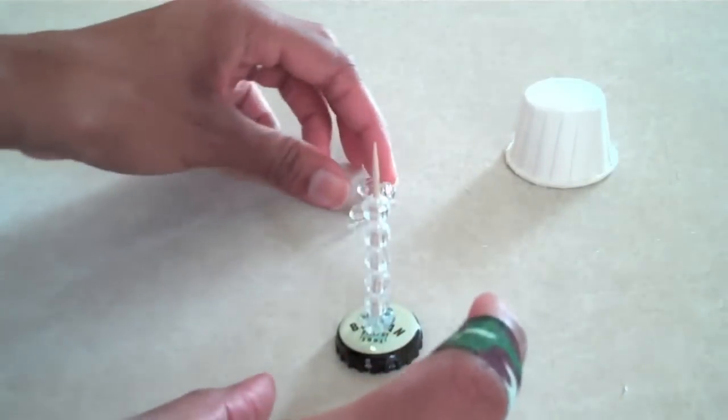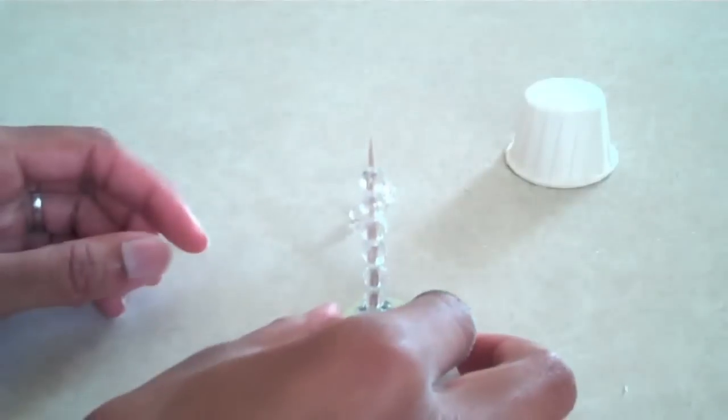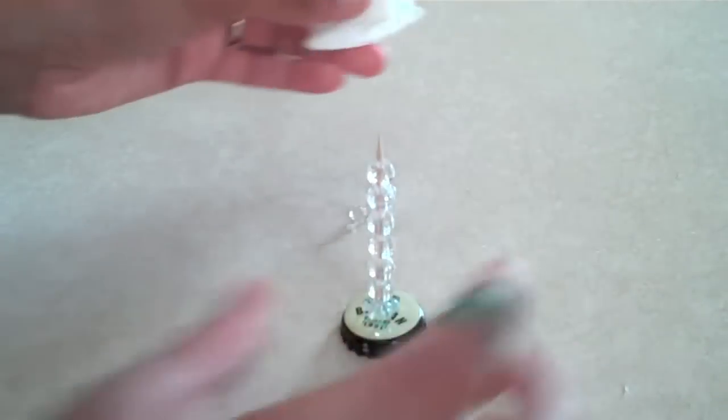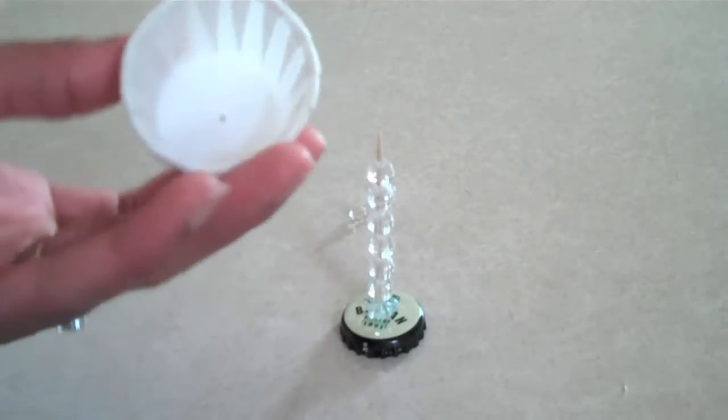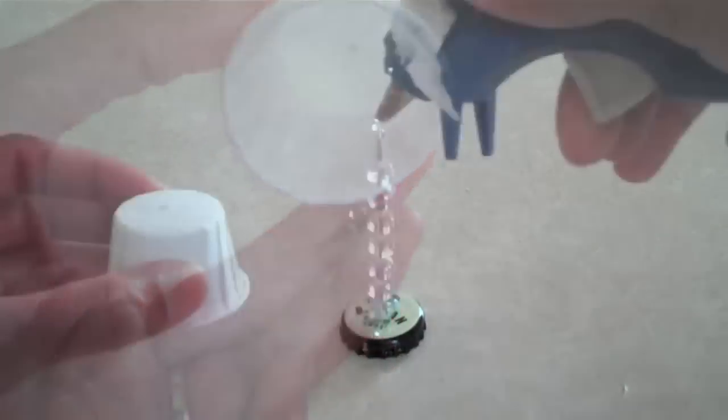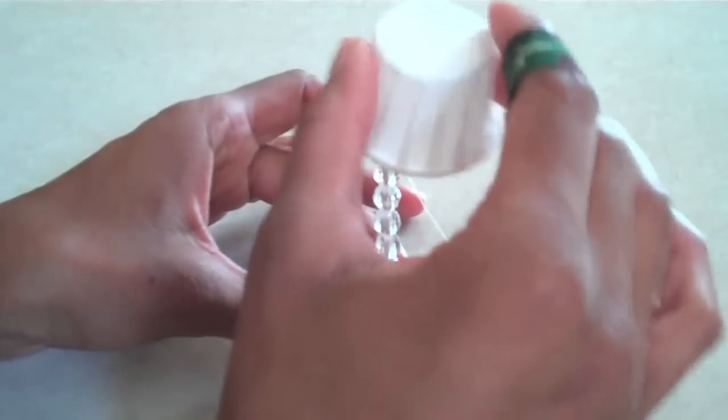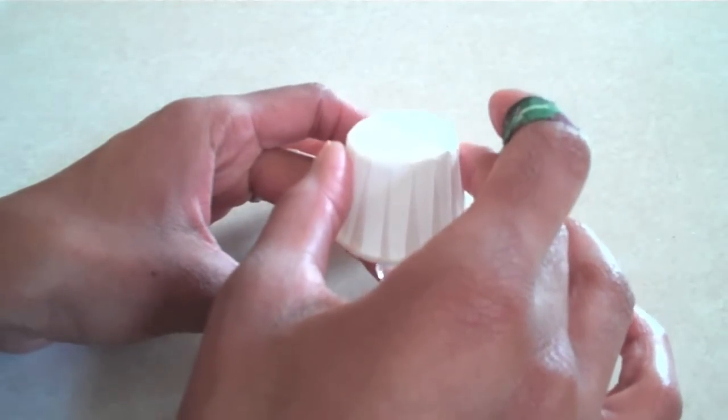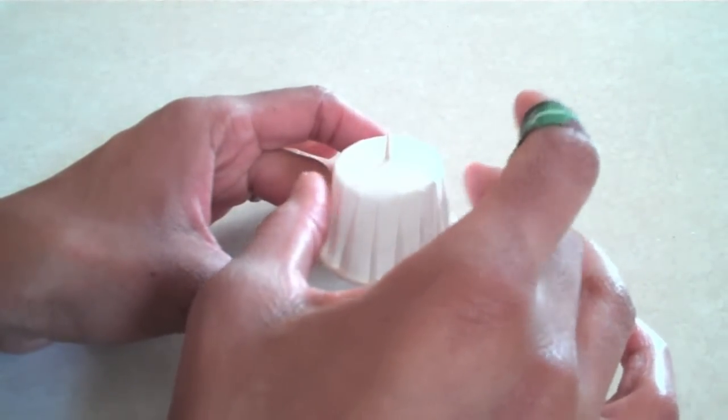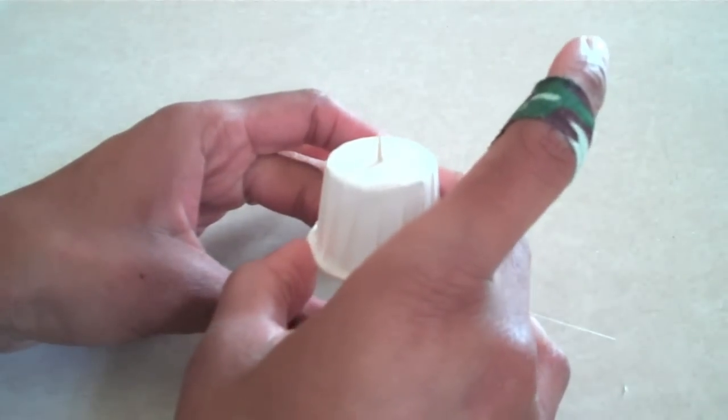I guess you could paint the toothpick too if you wanted to. Alright, when you feel like you've got about enough, take your little cup, you can pre-poke a hole in there, put some glue on top, put the top on like so.